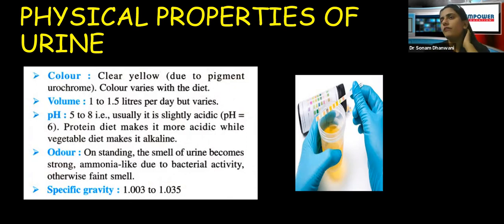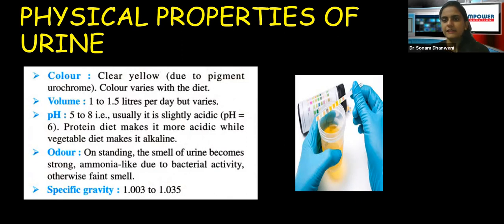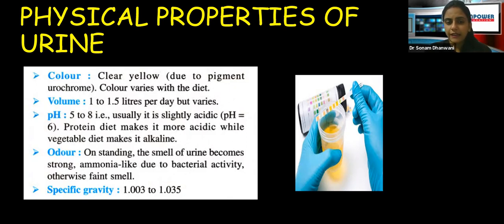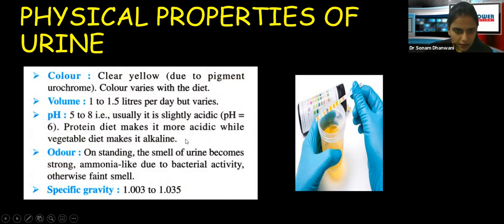When we consume a lot of salty or fibrous food, the urine can sometimes become alkaline — the diet can make it alkaline as well. Regarding odor: the smell of urine becomes very strong and ammonia-like due to bacterial activity. Otherwise it is usually a faint smell, but long-standing urine, like near urinals, produces a foul ammonia-like smell because of bacterial and chemical activity. Specific gravity numbers are not critically important to remember.